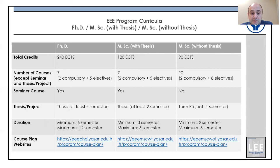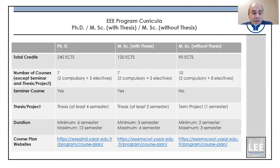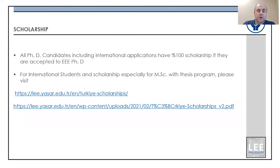In all of our programs, we have two compulsory courses, but we have several elective courses that you can select according to your research area and subject. You can find the details of these courses in the course plan given in the last row of this table.